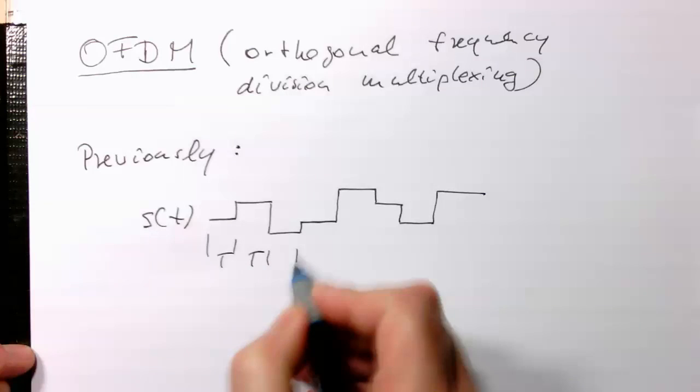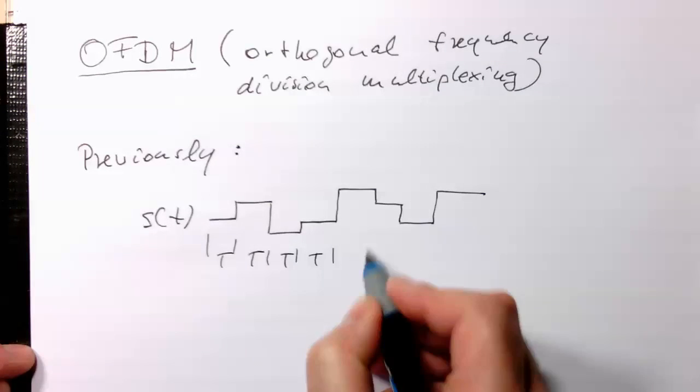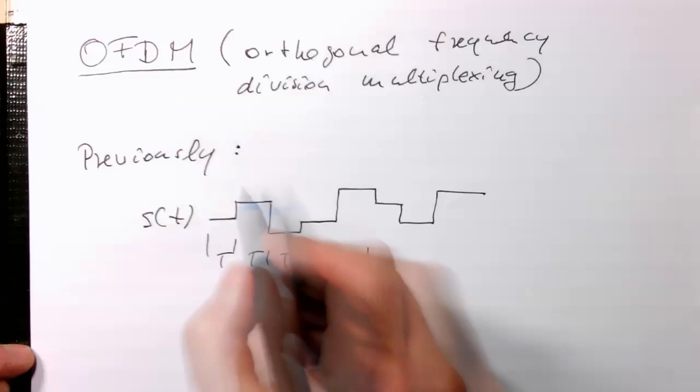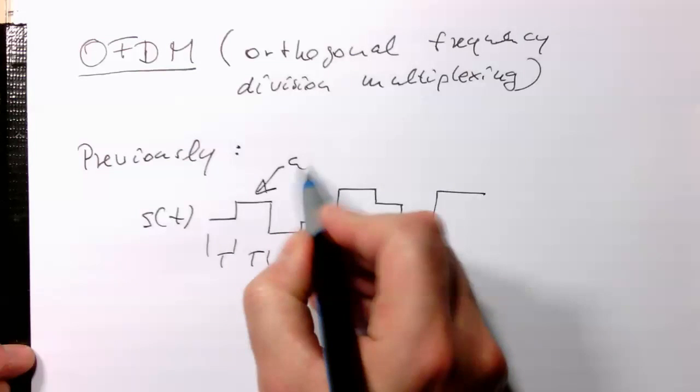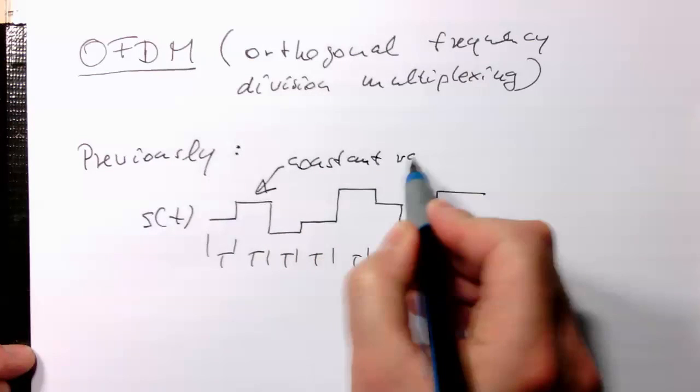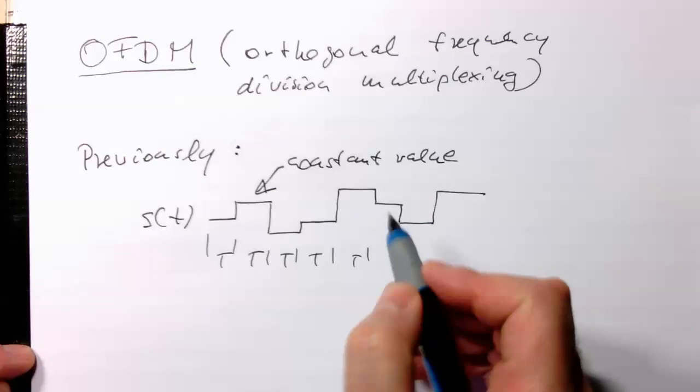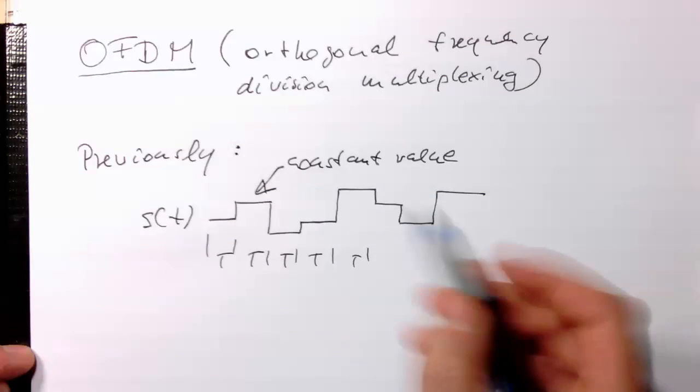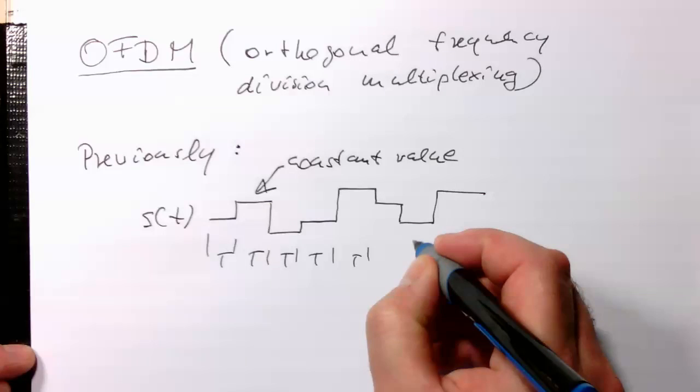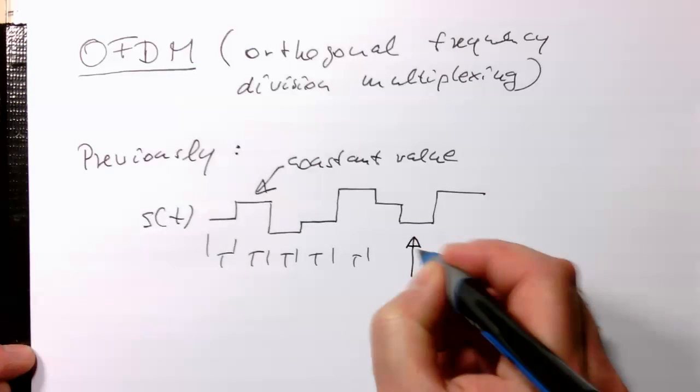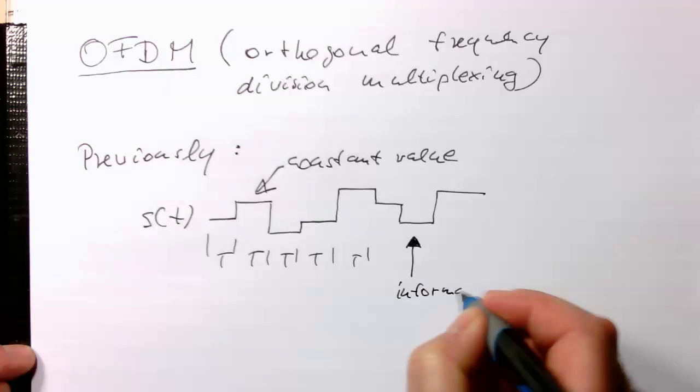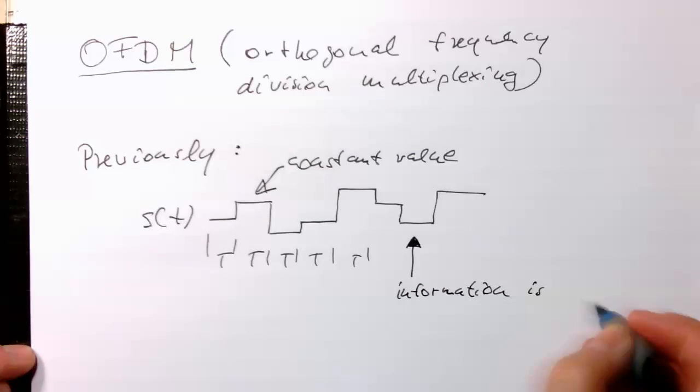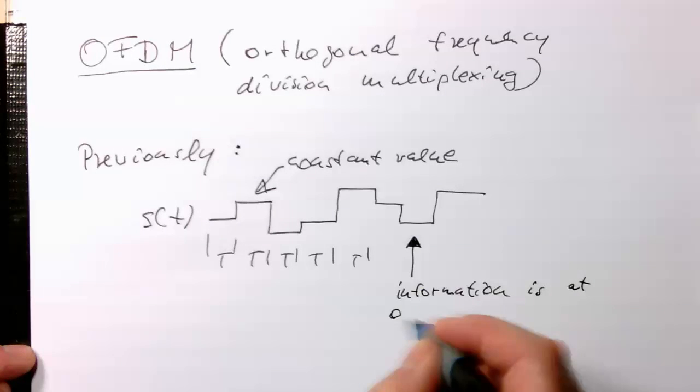So this lasted T here, that is T and so on. And so the important, the crucial thing is we have a constant value here. And the other important thing is we would only sample at one point here. So we would probably on the receiver side our information is somewhere in the middle here. So the information is at one sample point.